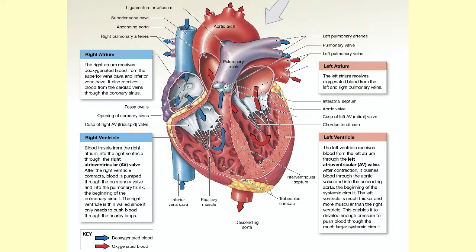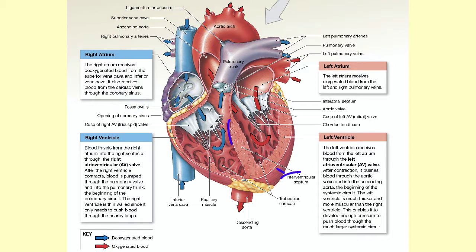Other important landmarks in this image are the fossa ovalis in the interatrial septum and ligamentum arteriosum found connecting the pulmonary trunk and the aortic arch. These are remnant structures from the fetal heart, which has a different circulatory pattern than was just described. You can also see the interventricular septum that separates the left and right ventricles.